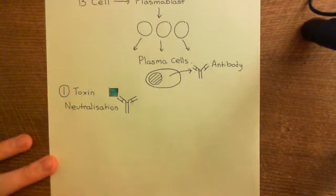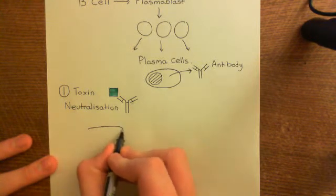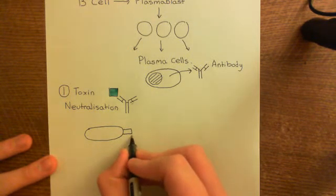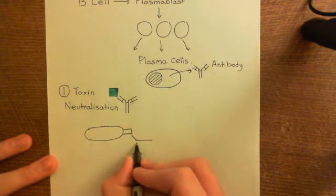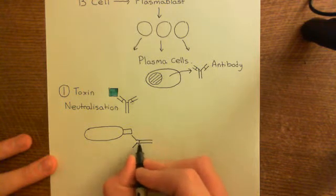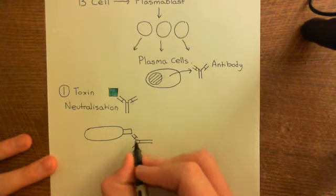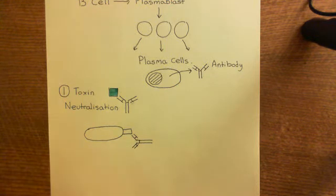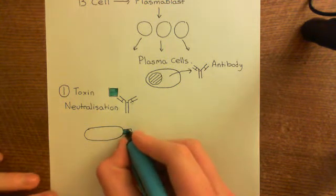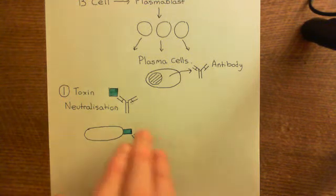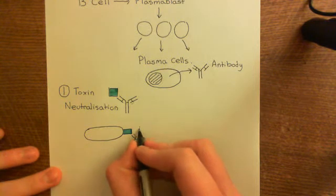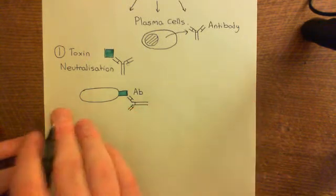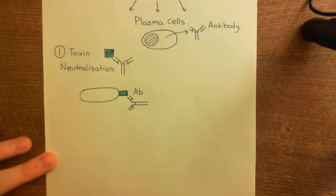What about if the antigen was instead on the surface of a microbe — a surface antigen? Well, the antibody will again bind to this surface antigen. Here is our antibody: the two heavy chains bound together by disulfide bonds, and the two light chains bound to the heavy chains by disulfide bonds. The antigen binding site will bind to the antigen, and this is going to help destroy this pathogen. The pathogen will end up coated in antibody — abbreviated as AB. How does antibody binding to the surface of the pathogen help to kill it?